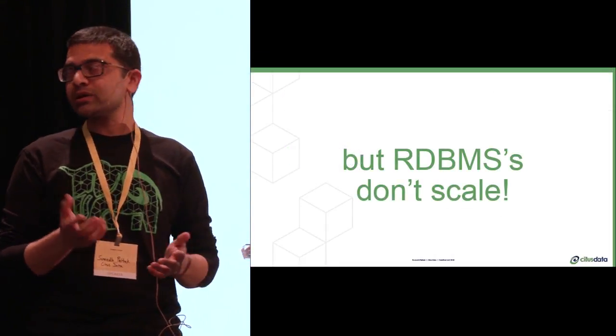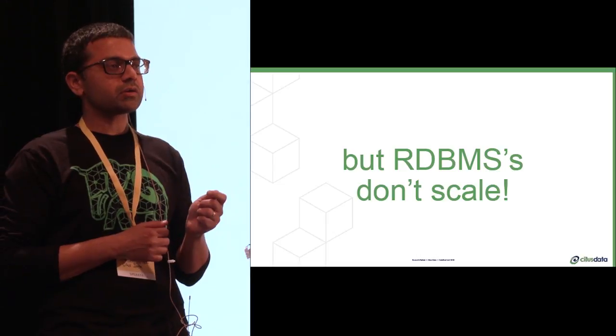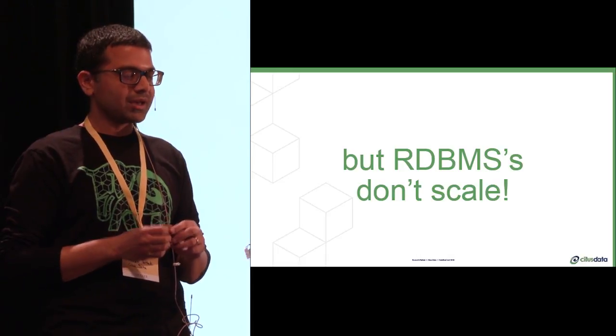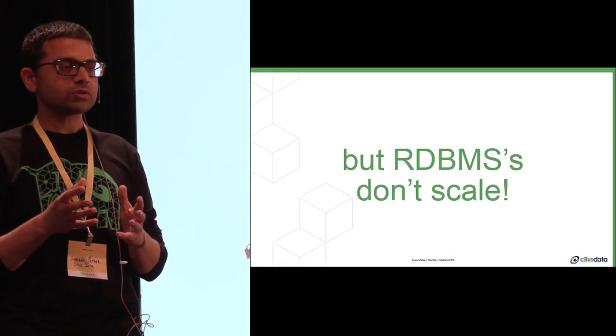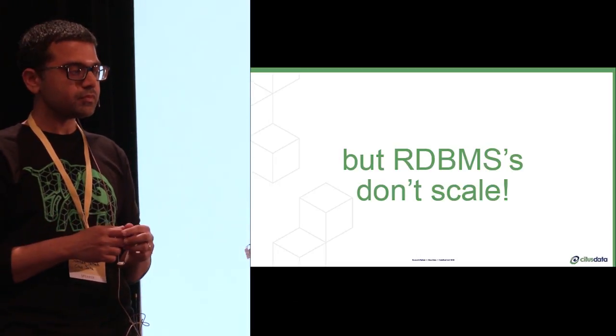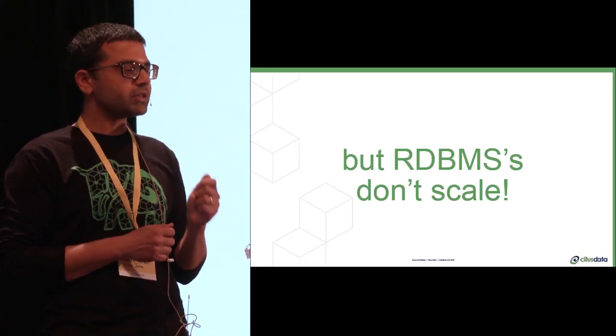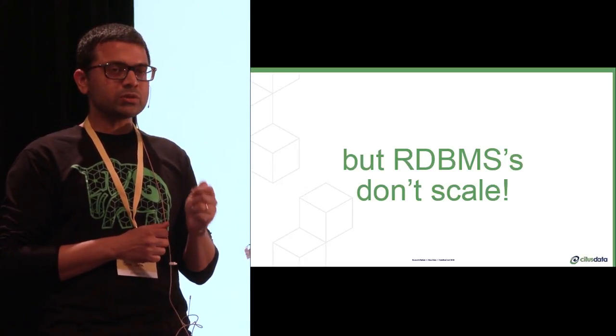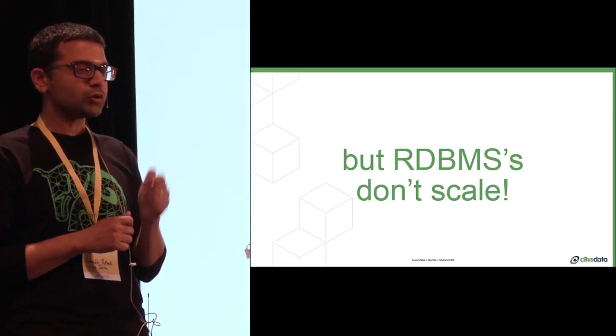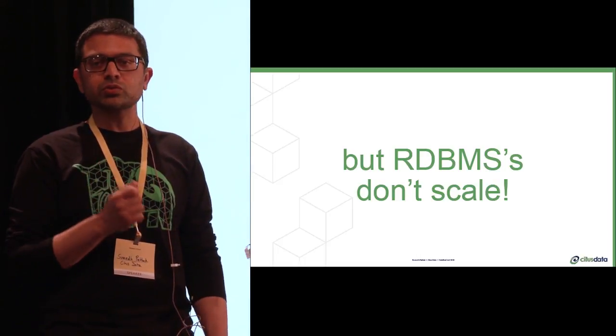But relational databases don't scale, right? Or at least that's been the conventional wisdom. When I was at Amazon, most of our applications were built at the time in early 2000s on Oracle or MySQL. As the company grew, we figured out how to scale the application and the web servers, but the database remained a bottleneck. So we had to build something new. We did that by actually taking away functionality. We took away the relational semantics and made it a key value store. We took away SQL, or the expressive query language, and provided a simple get and put API. And we also took away transactions and data consistency. The result was Dynamo, which was the precursor to the NoSQL movement.